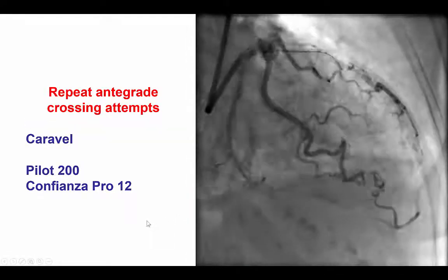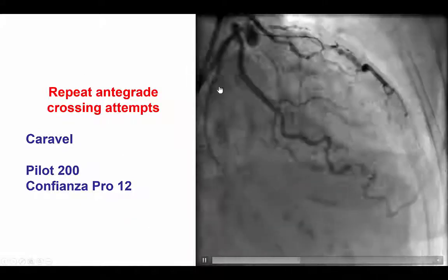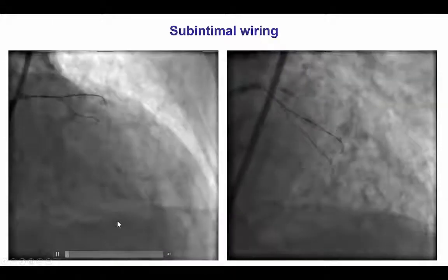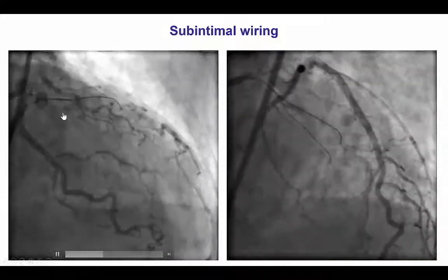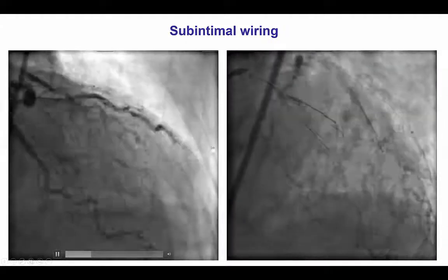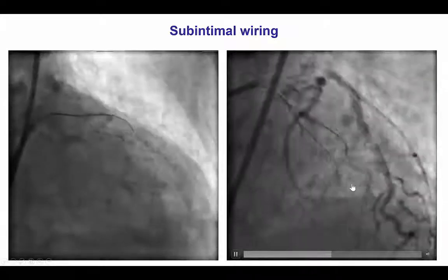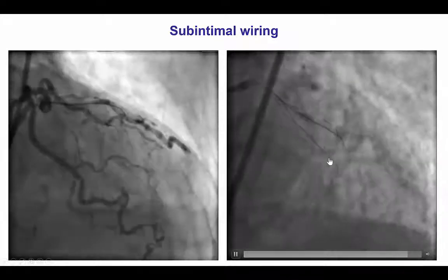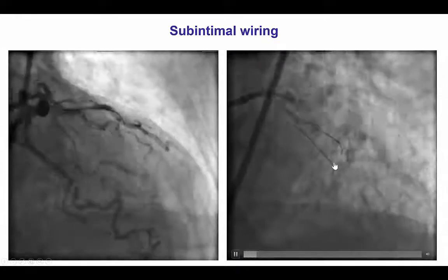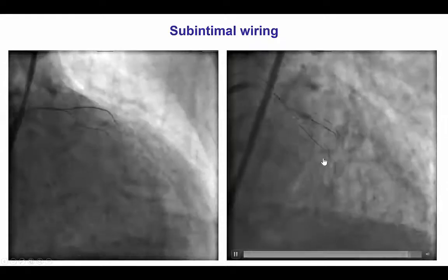We switched back to the antegrade approach, advanced a microcatheter to the proximal cap, and tried again with the Pilot 200 and a Confianza Pro 12 guidewire. This time we were able to advance the wire into the subintimal space, as confirmed by injection showing that the guidewire in the LAD is dancing in sync with the distal true lumen. So we had subintimal crossing from the LAD into the occlusion.